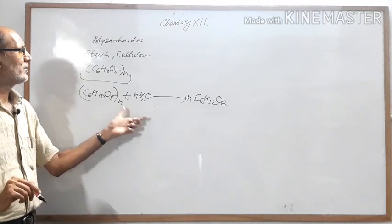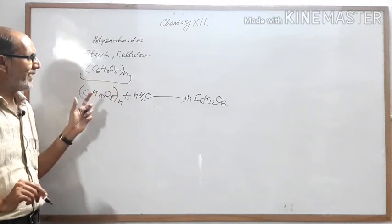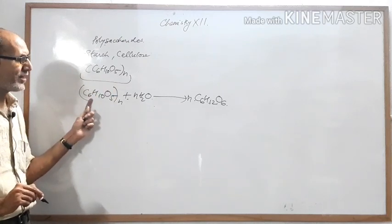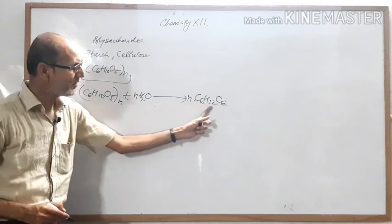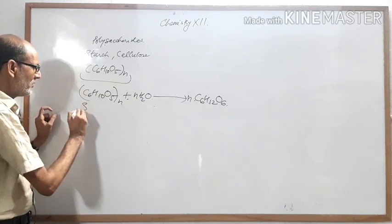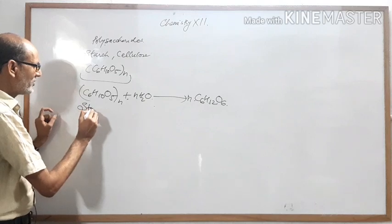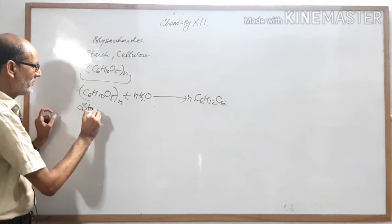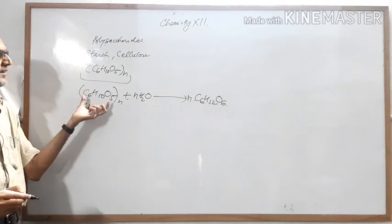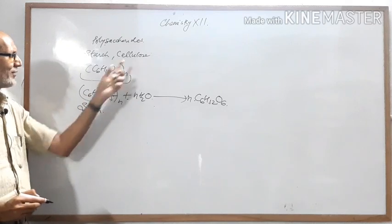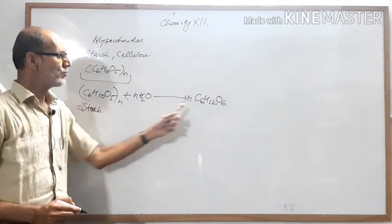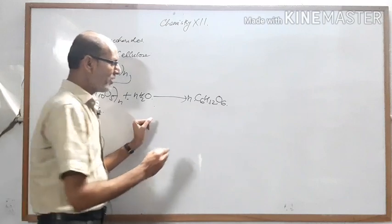Similarly, you can hydrolyse cellulose also. When you take starch and hydrolyse it, you form glucose. You can also write cellulose here, but note that when cellulose undergoes hydrolysis, glucose will not form in the same way.